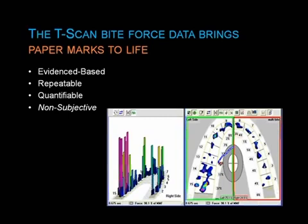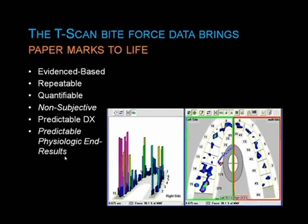Because it's non-subjective, it allows you to make very intelligent, predictable diagnoses. For example, in this case, you can clearly see that the bite is way off to the left side, that the last two teeth on the left are taking most of the occlusion — significantly more than the rest of the case — and that the case is completely imbalanced with much of it concentrated in the posterior left. That helps you objectively treat the case and obtain physiologic end results that improve occlusion care, ensuring you're treating the right teeth and the right contacts.